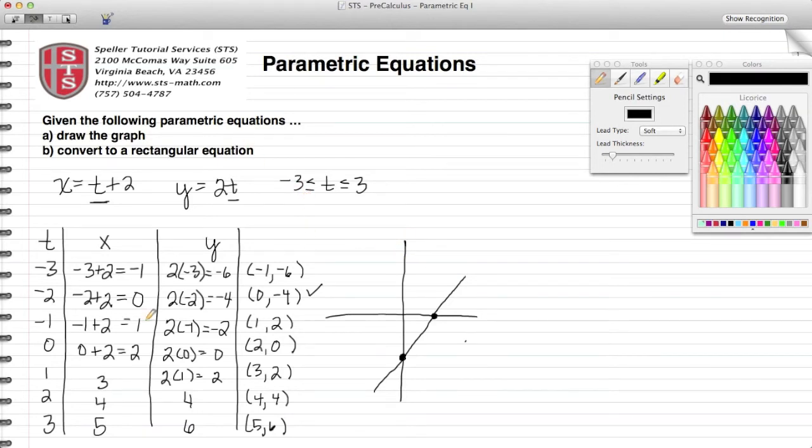Again, it's bounded from negative 3 to positive 3 because those are my T values. As T increases, I see that this graph is moving in this direction, so that's what the arrows signify if I were to draw the graph by hand. Now let's take a look at a calculator so that we can actually put these values in and ensure that our hand calculations are correct.